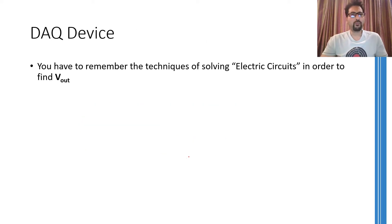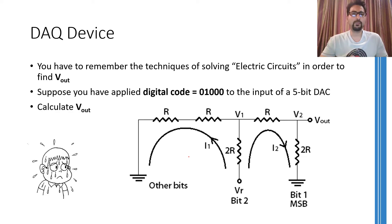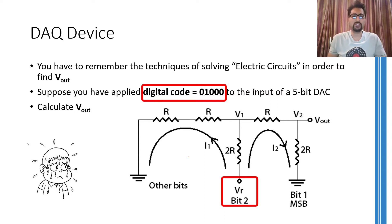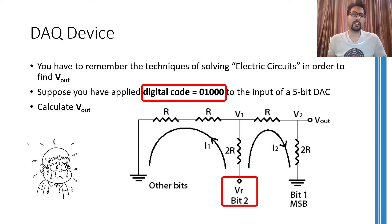Figuring out the output voltage of a digital to analog converter is quite easy if you have the basic understanding of solving electric circuits. Suppose that we have a 5-bit digital to analog converter and a specific code has been applied at the input. In this case, only the reference voltage source corresponding to the second most significant bit will be turned on whereas all other sources are turned off. So we are going to have this equivalent circuit.